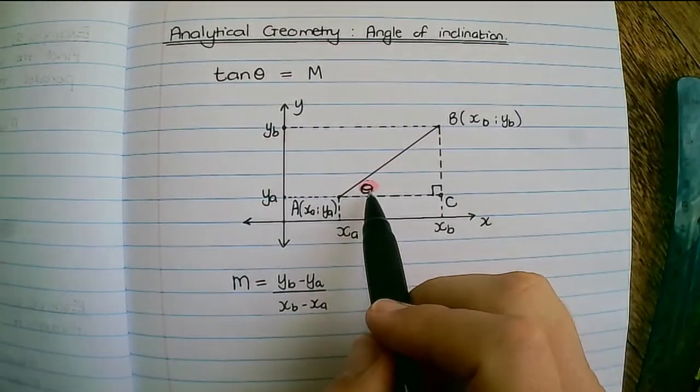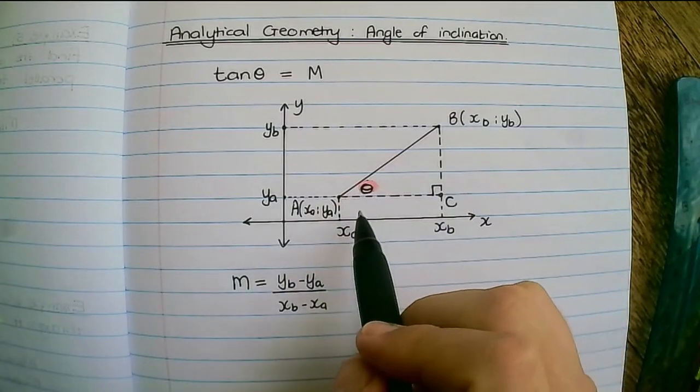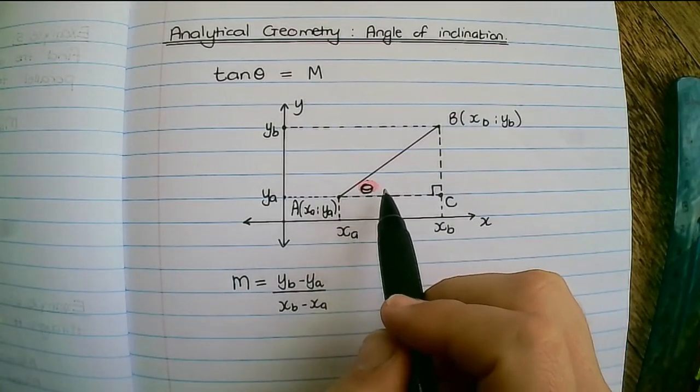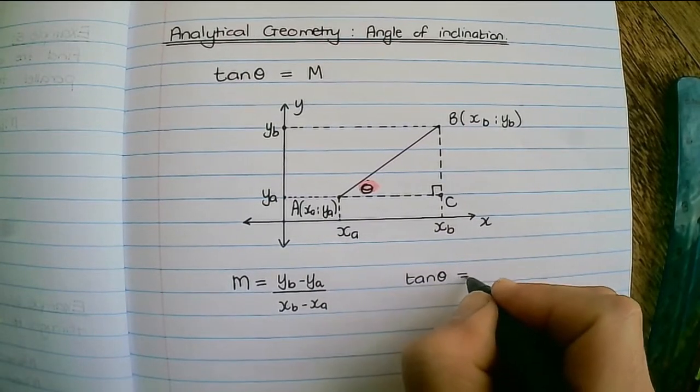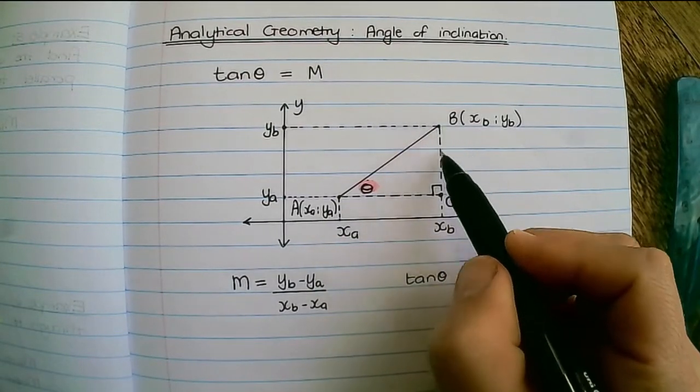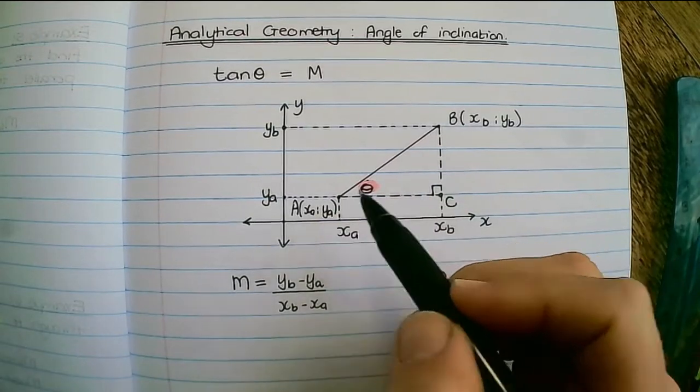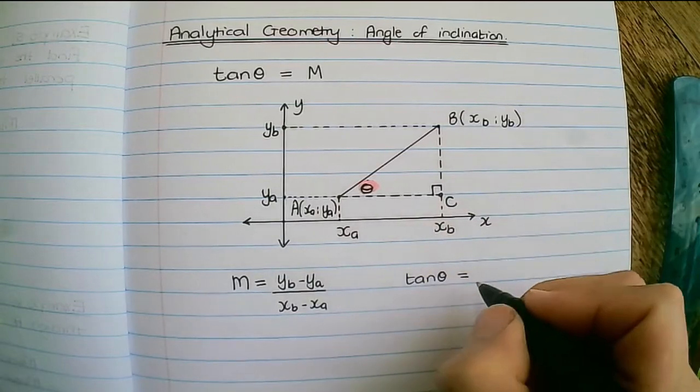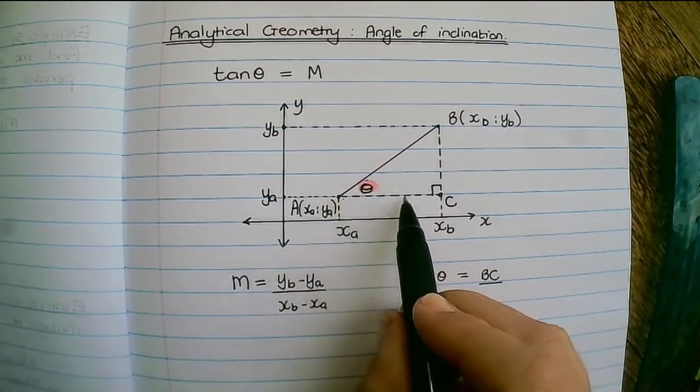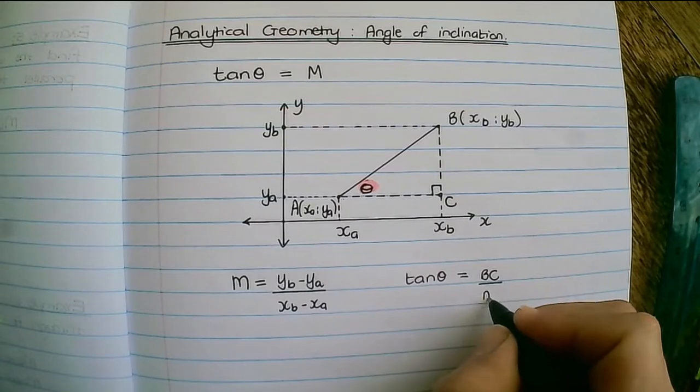And if I put in theta in this triangle I can find the tan of theta. So the tan of theta is the opposite over the adjacent. The opposite line is BC and the adjacent line is AC in that triangle.